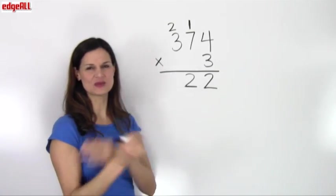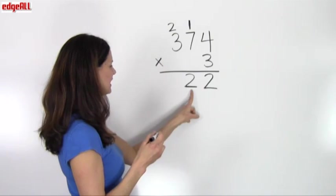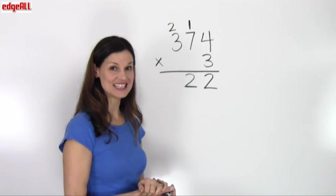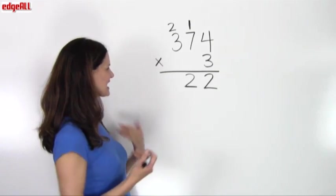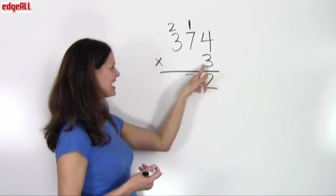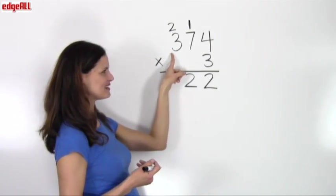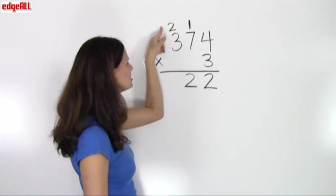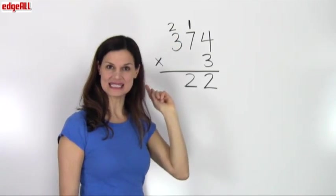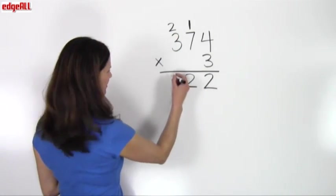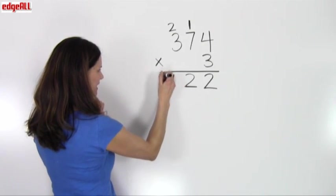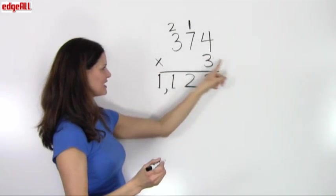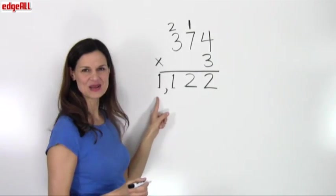I can keep doing this with larger and larger numbers. Each time I regroup, I write the digit in the ones place here, and place the digit in the tens place into the next column. Now I multiply 3 by the digit in the hundreds place of 374, which is 3. So 3 times 3 equals 9, but I need to add that 2 I regrouped — so 9 plus 2 is 11. Since I'm finished now, I can write the whole 11 here. My final answer is 374 times 3 equals 1,122.